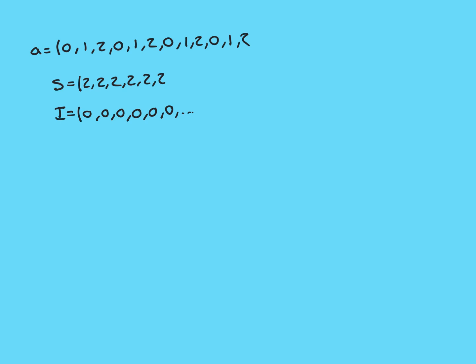So let's firstly consider the sequence of supremums. You can see no matter how far you go along in this sequence, the set that you're always going to be taking the supremum of is going to be the set {0, 1, 2}, because those three numbers continue on forever. So no matter how far you go along and get rid of the first n terms, the set is always going to remain the same — it's going to be {0, 1, 2}. And 2 is the maximum in that set, therefore the supremum is always going to be 2.